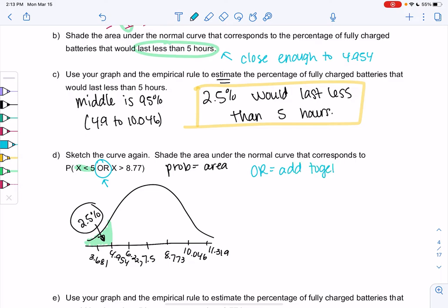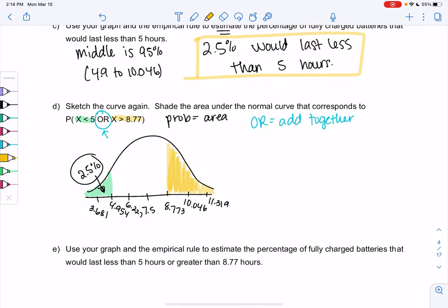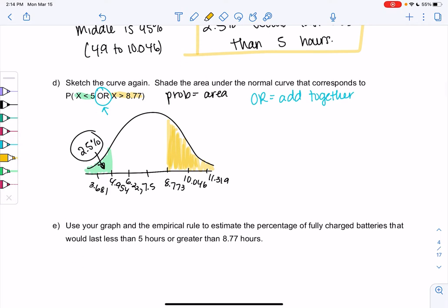So it'll be 2.5% plus something or greater than 8.77. So how many batteries last less than 5 or more than 8.7? So these are our really short batteries or our really long batteries. So now we need to figure out this yellow area to answer part E. So we want to use the graph to estimate batteries that last less than 5. We already found less than 5 is 2.5 or more than 8.77. And we don't know that one yet.